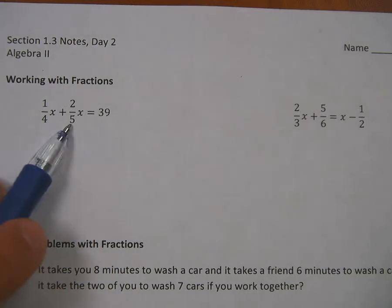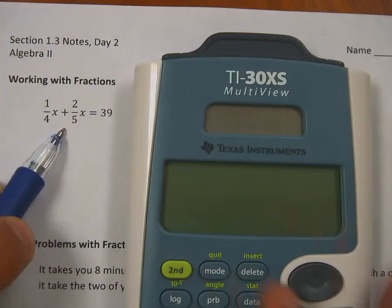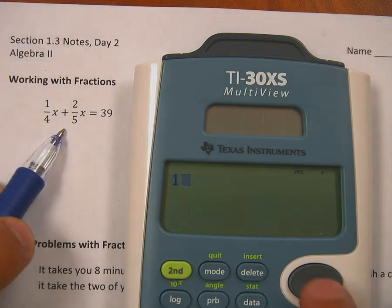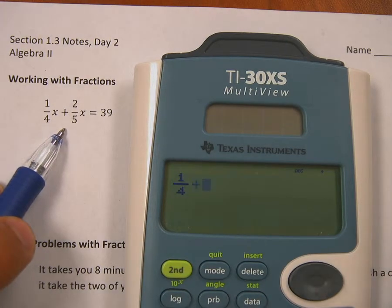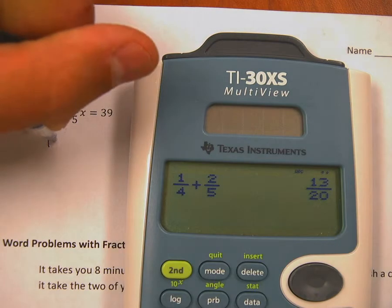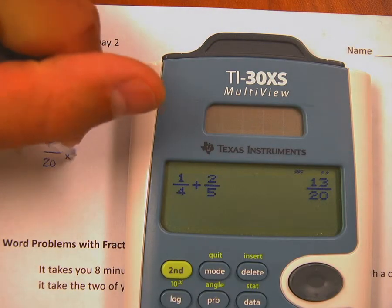The easiest method I think in this case is just to add the two x's together. If you've got a calculator, we can do something like this where we just do 1/4 plus 2/5, and that tells us that we have 13/20 of an x. So I have 13/20x and that is equal to 39.